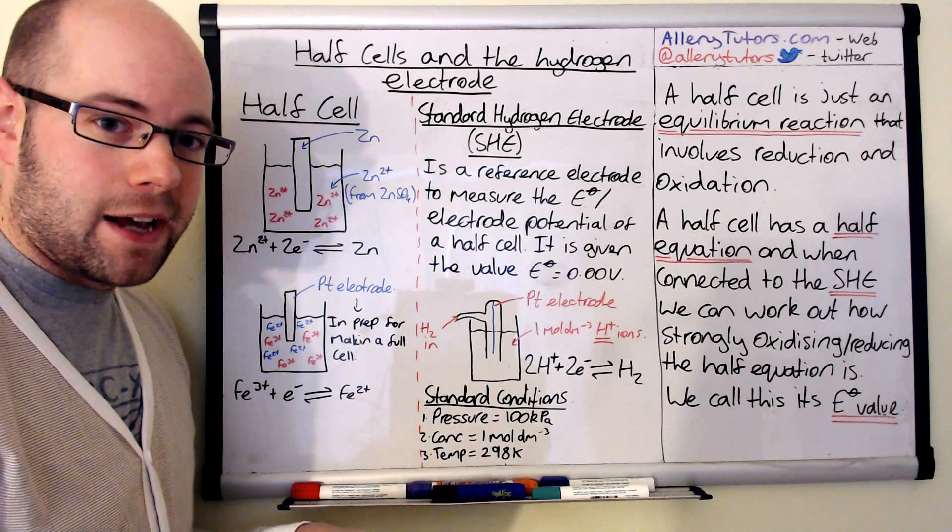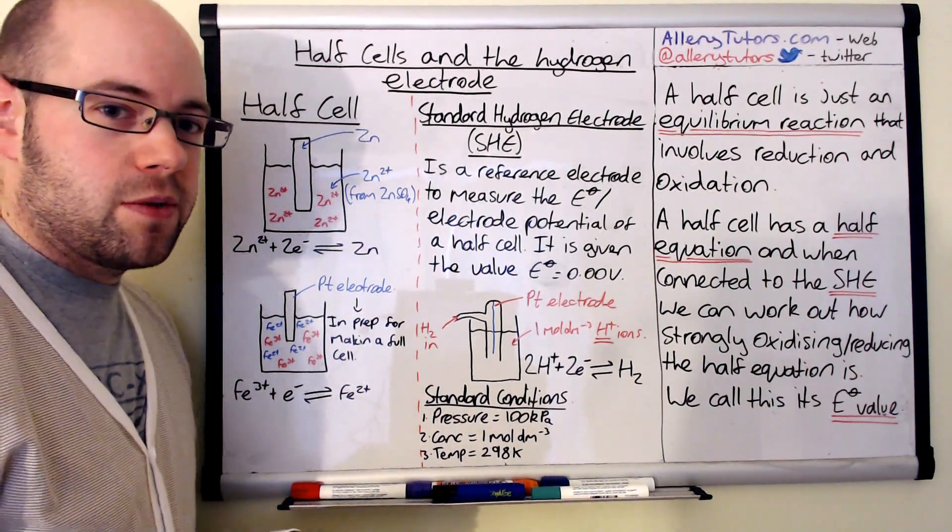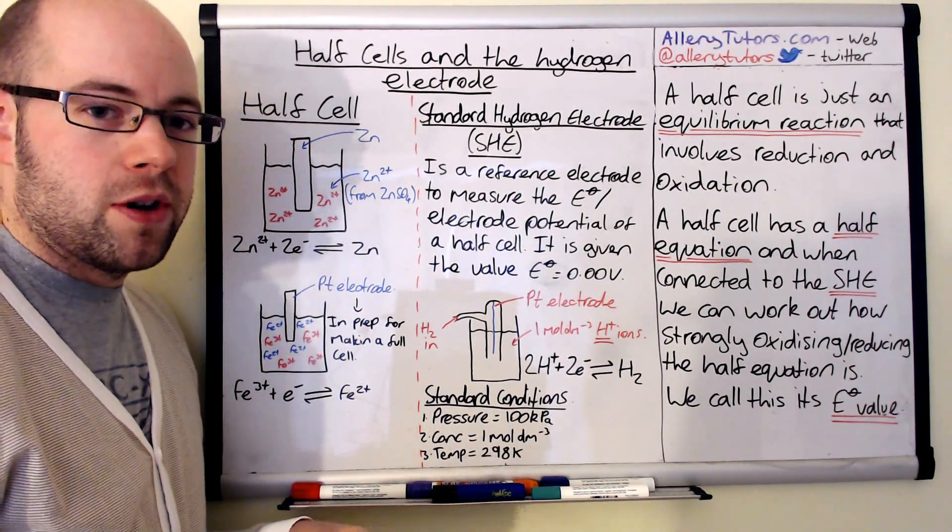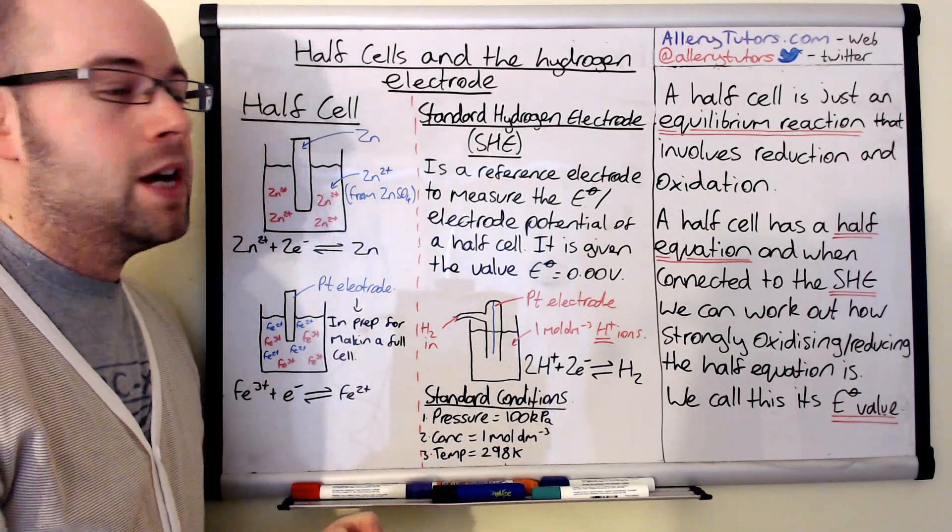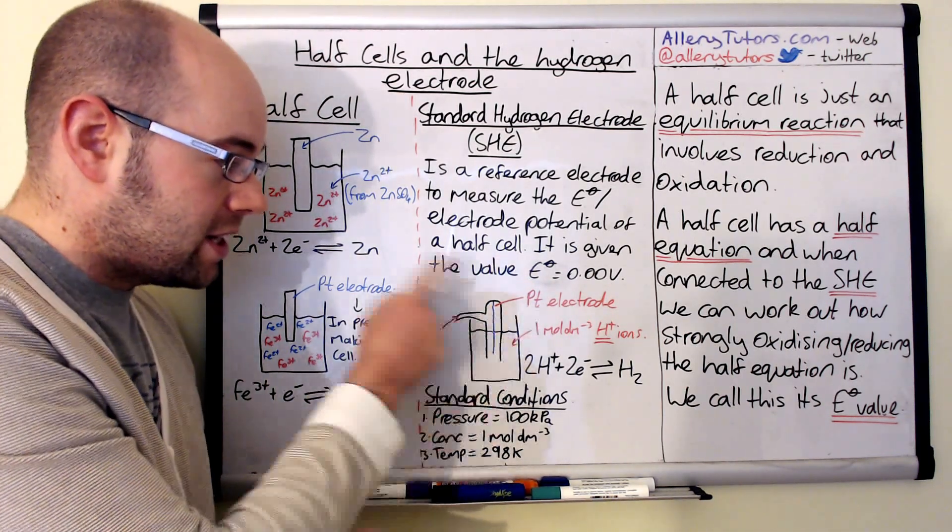It's given the value itself of zero volts. So we know that any voltage that's going to be shown on a voltmeter, or any potential difference that's going to be shown on a voltmeter, is because of the cell that we've connected this to.